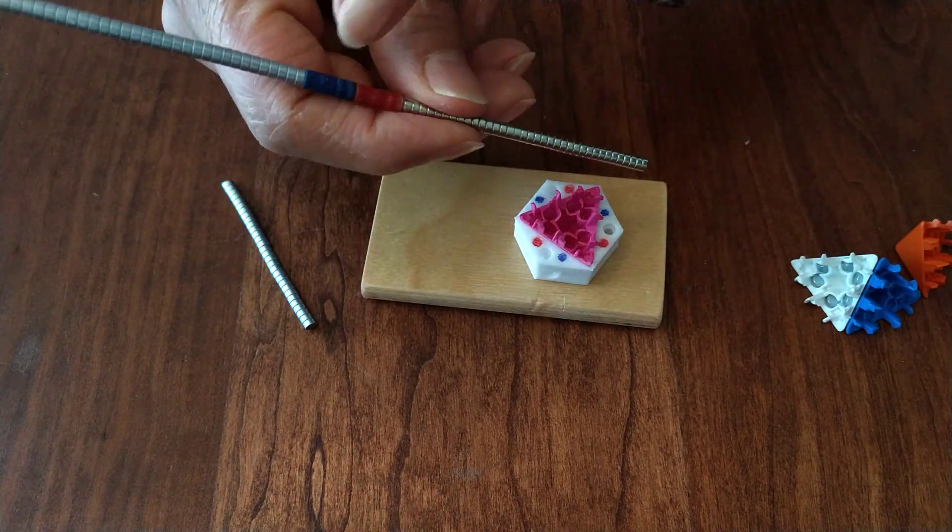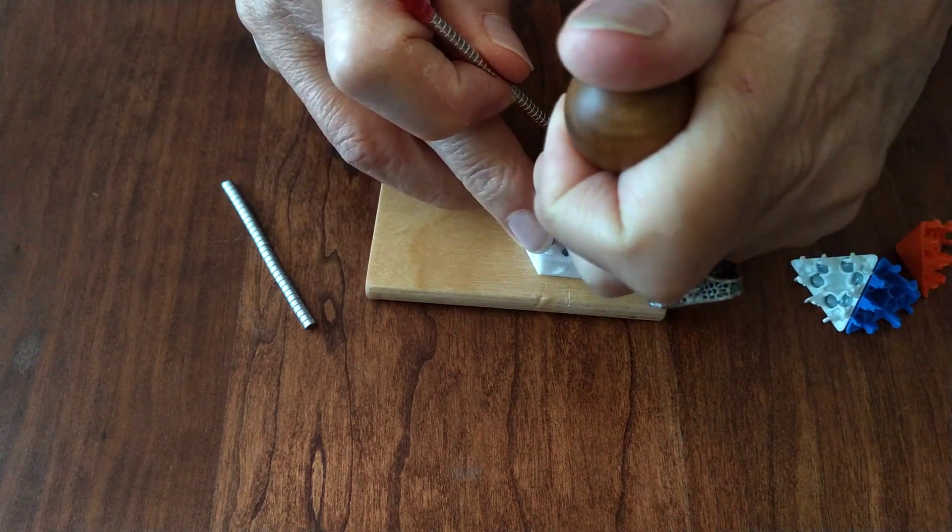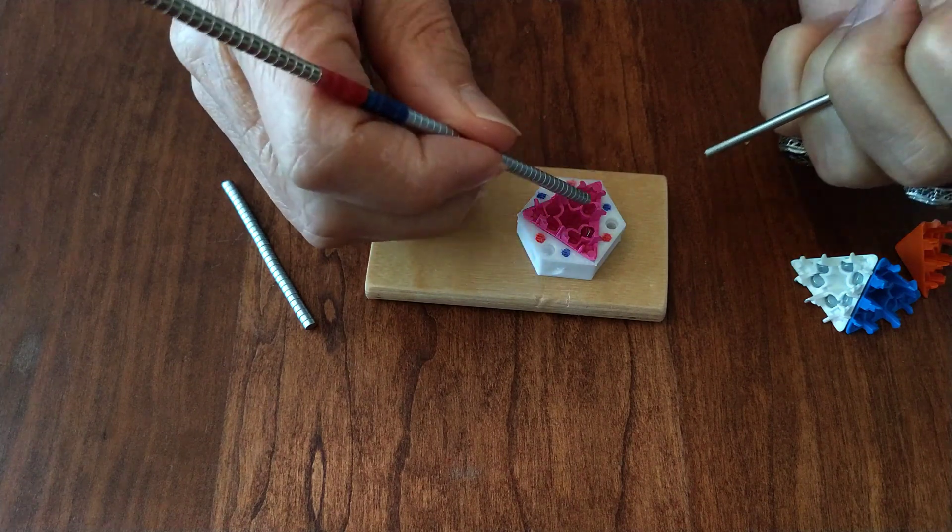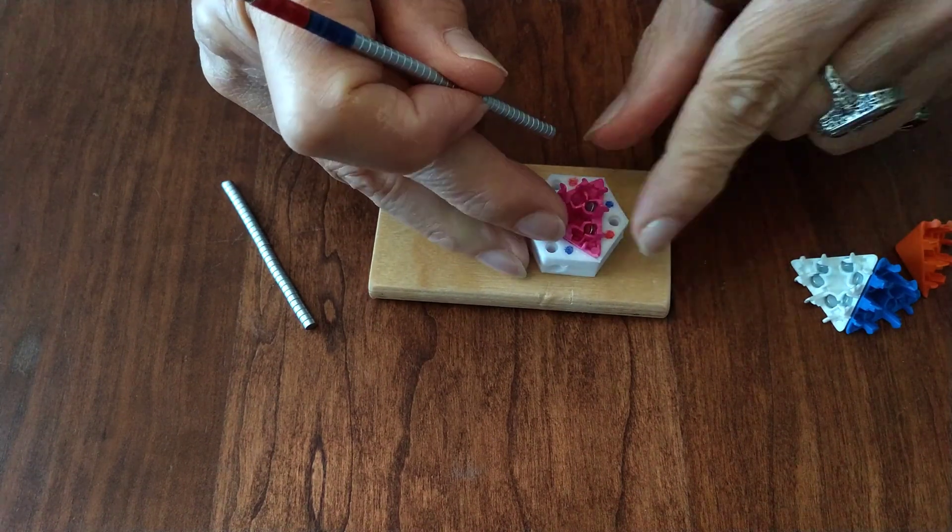So what we do is put the bluish looking magnets at the blue end of the polarity tool and the reddish magnets on the red. And then we just do like before, red to red, blue to blue. It's exactly the same.